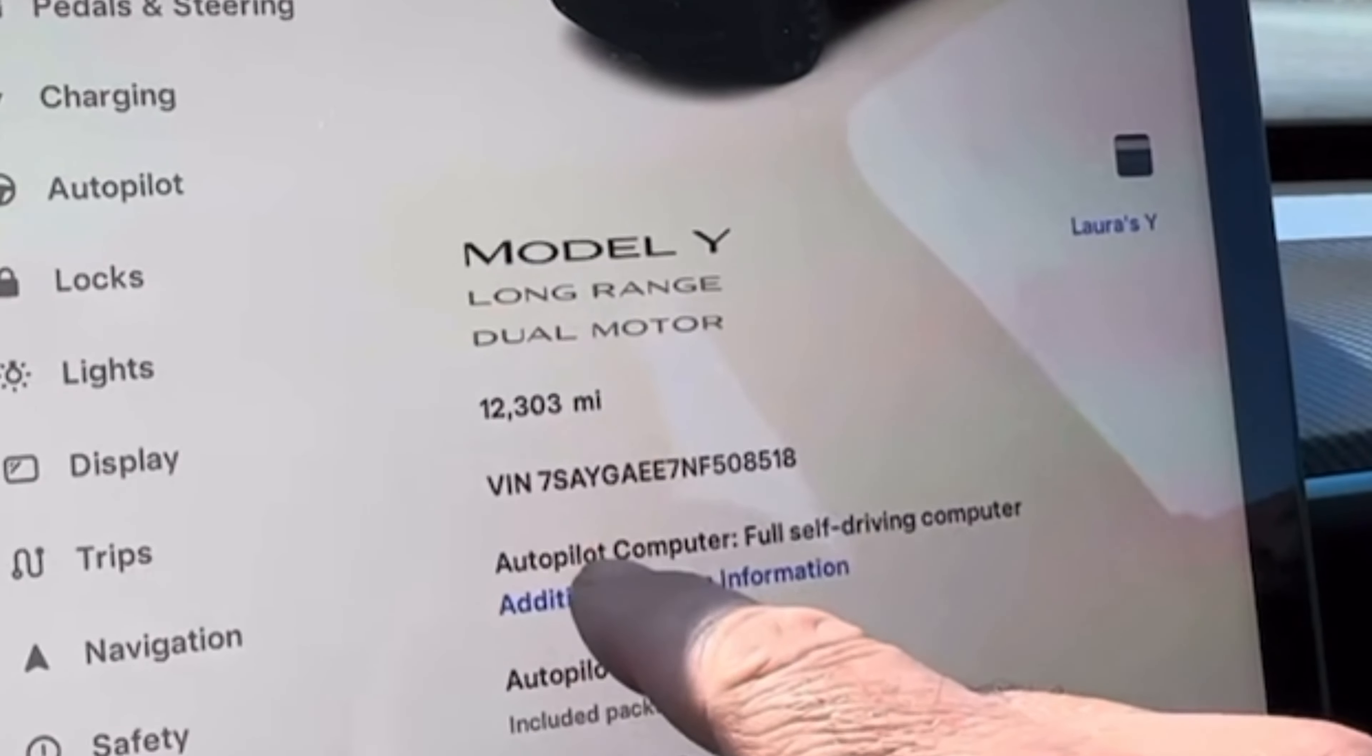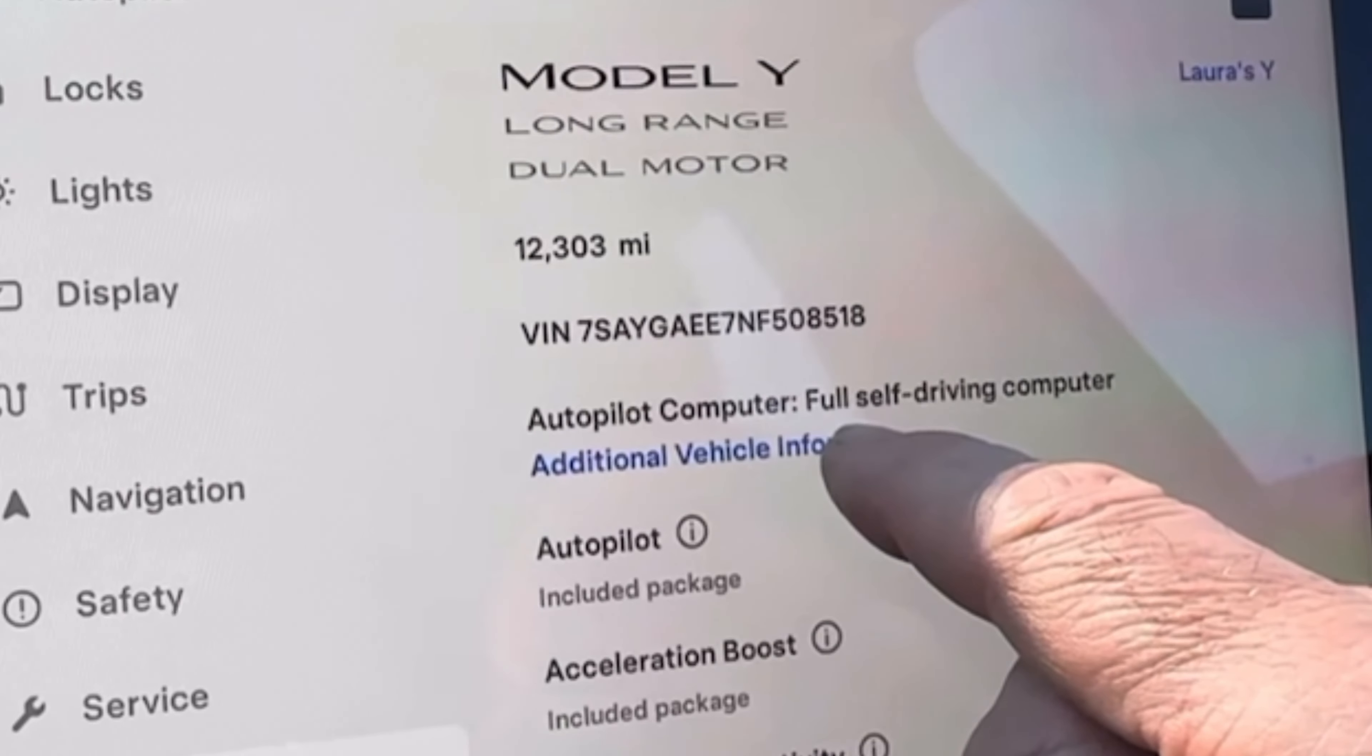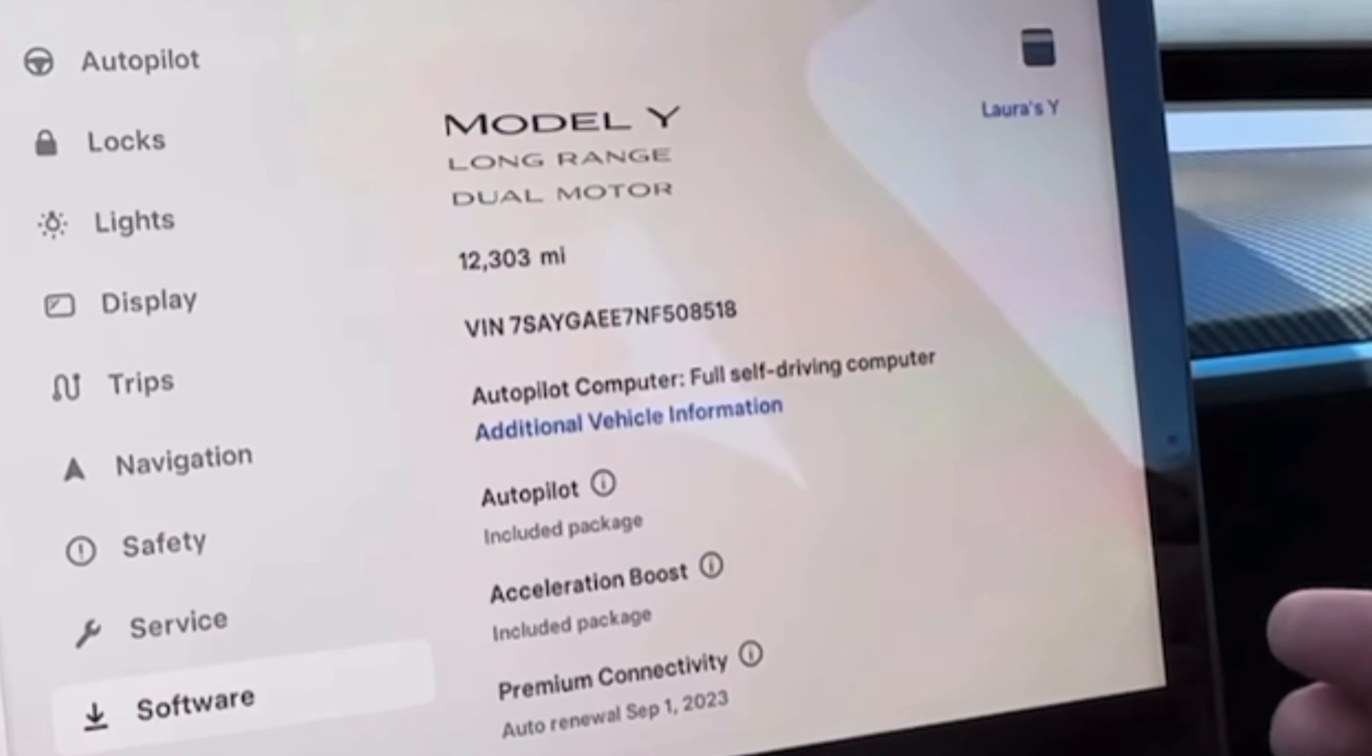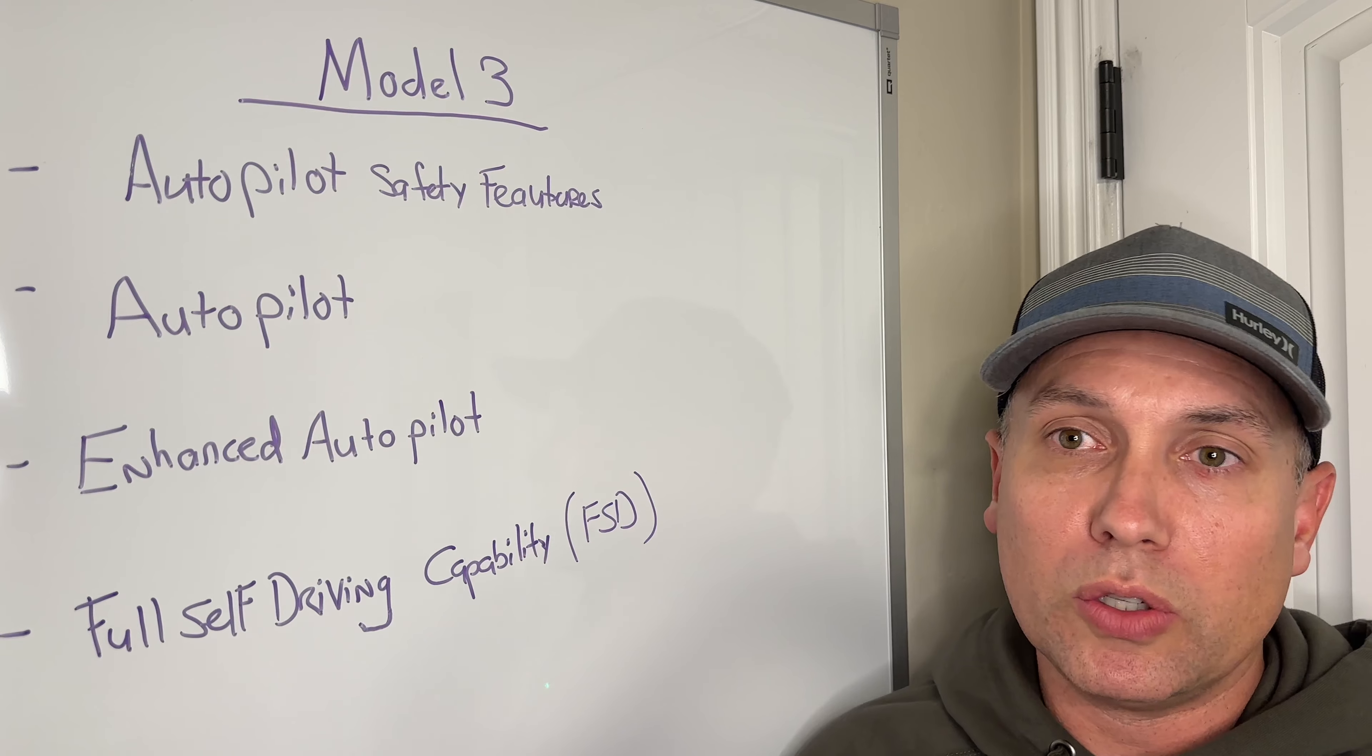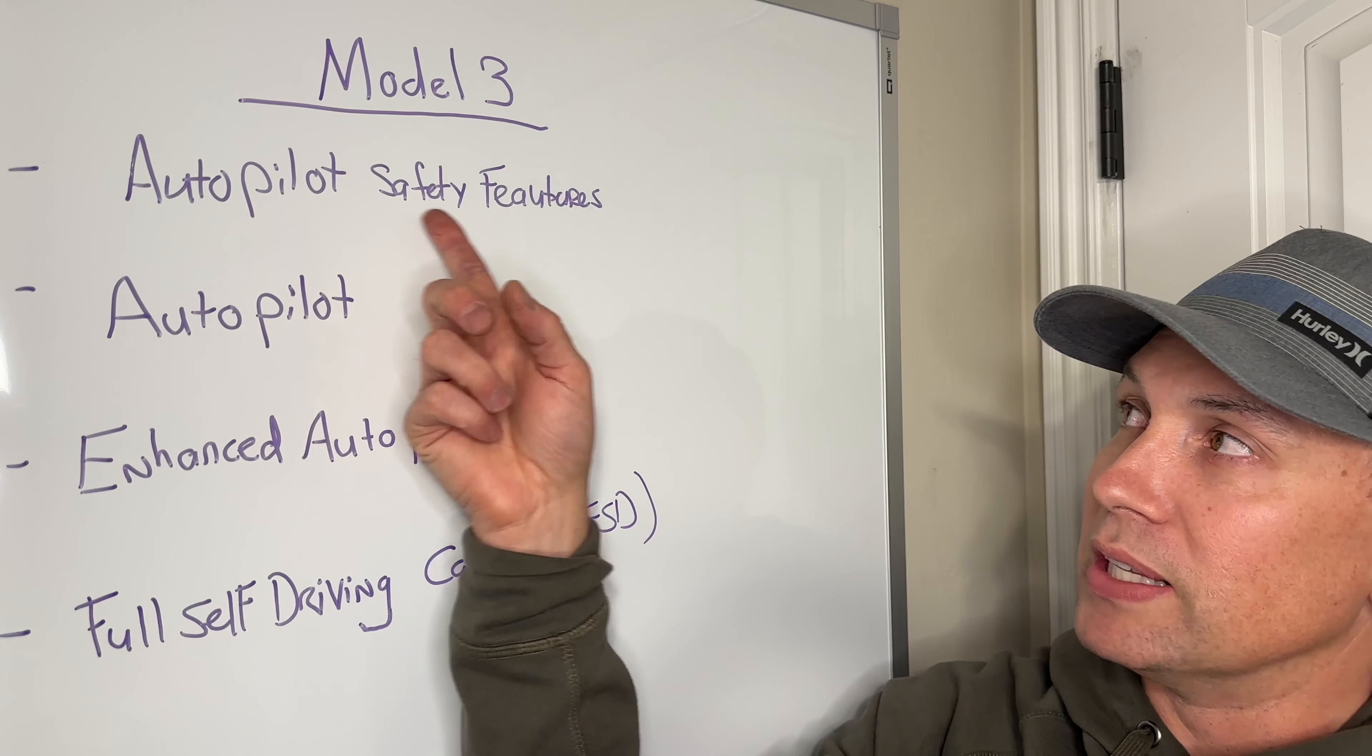It's going to show the different trims that the car is. And then it's also going to have the included package. The included package really is going to tell you what self-driving capabilities that the car has and what's included and what's going to be transferring to you as the new owner. This was what all the cars were included with 2017, 2018, part of 2019. And that's the autopilot safety features.